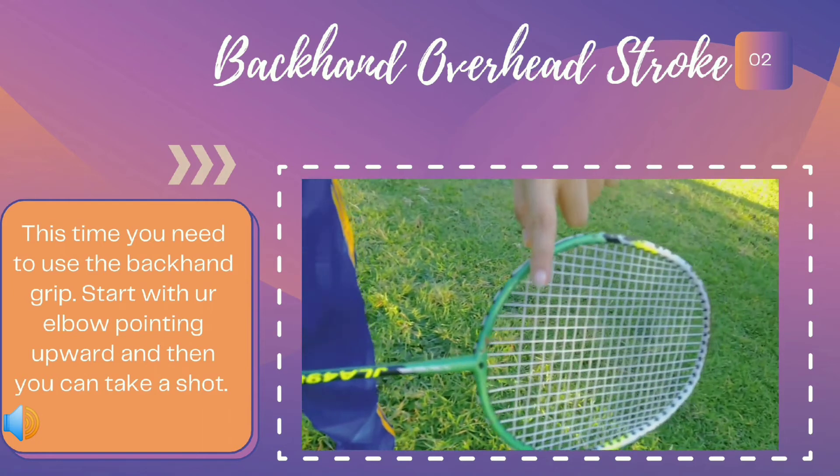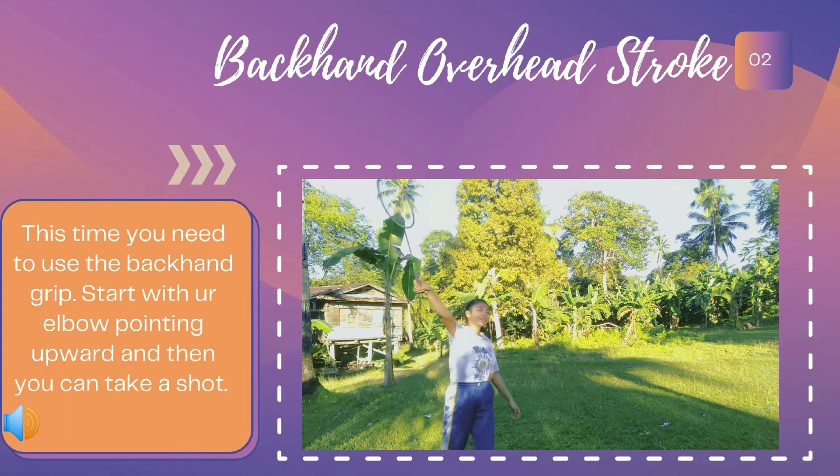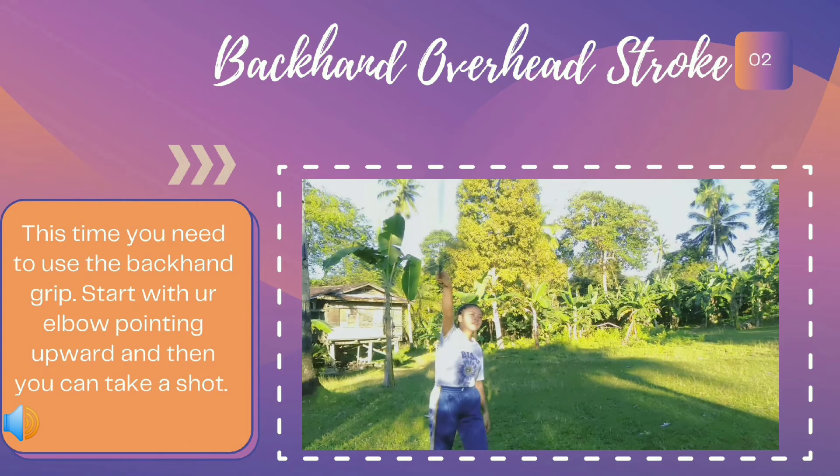Next we have the backhand overhead stroke. This time you need to use the backhand grip, start with your elbow pointing upward, and then you can take a shot.